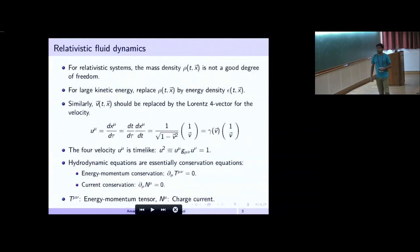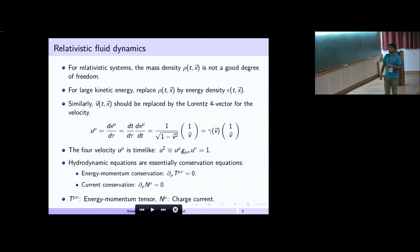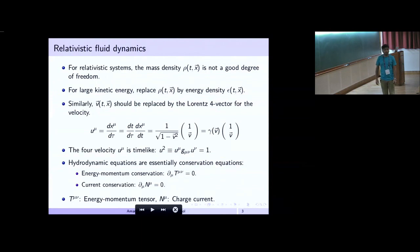I will quickly go through the basics of the formulation. For a relativistic system, mass density is not a good degree of freedom — we have to account for kinetic energy, so energy density is what we consider as the degree of freedom. Similarly, three-velocity should be replaced by the four-velocity, though the number of degrees of freedom remains three because it is normalized to one, time-like.